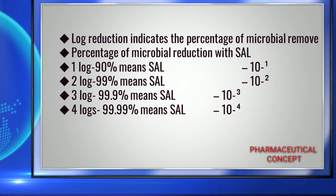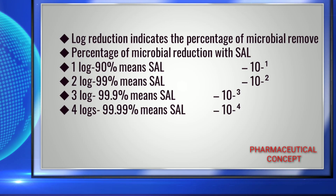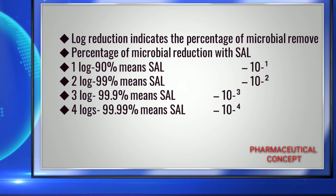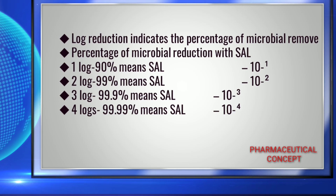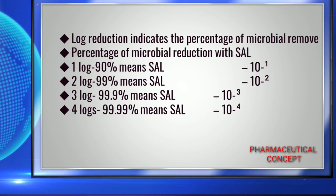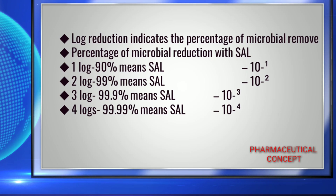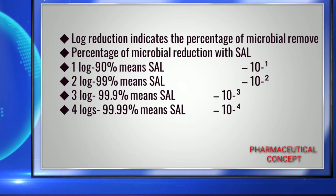Log reduction indicates the percentage of microbes removed. One log reduction equals 90% microbial reduction, which corresponds to SAL 10 to the power of minus 1. Three logs equals 99.9% reduction, corresponding to SAL 10 to the power of minus 3. Four logs, that is 99.99% reduction, corresponds to SAL 10 to the power of minus 4.